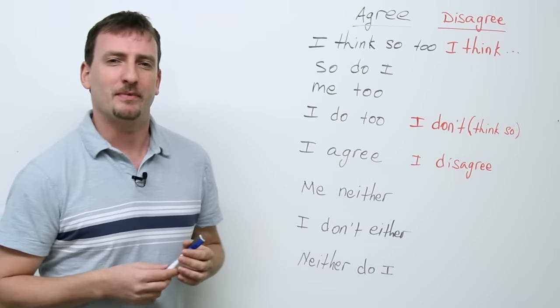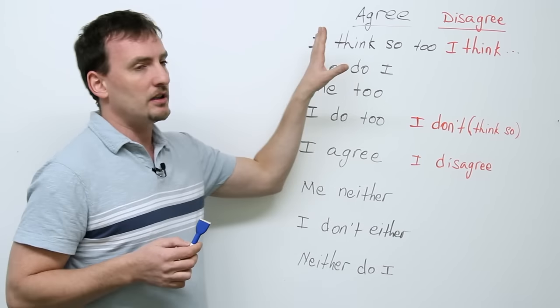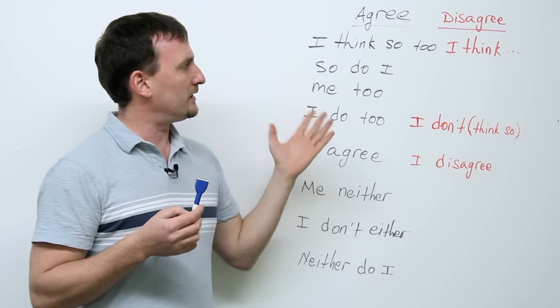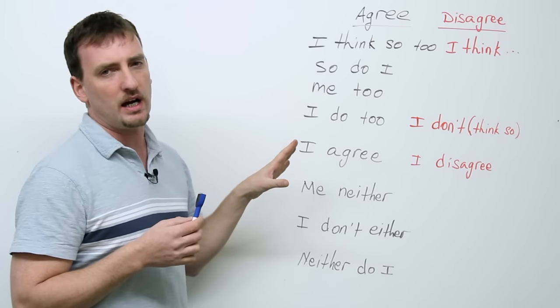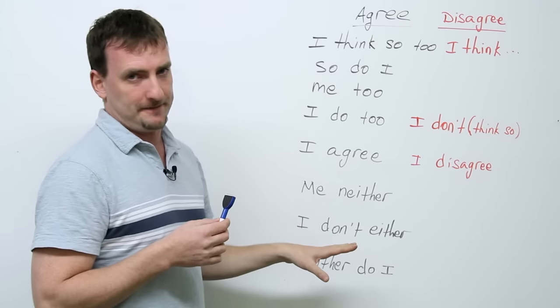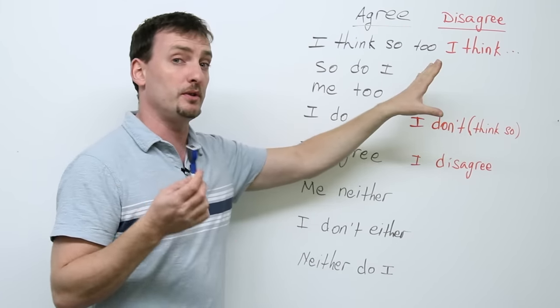Hi again. I'm Adam from www.engvid.com. Today's lesson is going to be about agreeing and disagreeing. I know that sometimes these get a little bit confusing, but I think I understand why they get a little bit confusing. There are many ways to agree, okay? So we're going to look at these first, and then we will look at the ways to disagree.